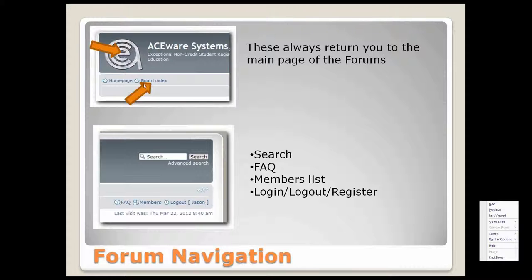You can see this sort of tree structure up here where you start at the homepage and then go out to the board index. If you go into a category, then a forum, then a topic, it's going to put links to each of those the deeper you go in. So if you wanted to go back one, you would just click back one category. You can also click the logo at the very top left — that's always going to return you to the very main page of the forum.